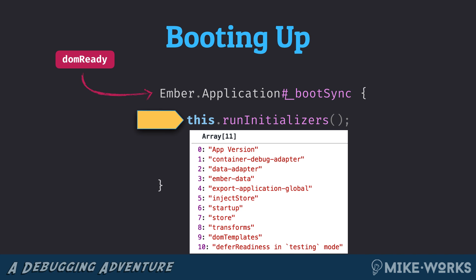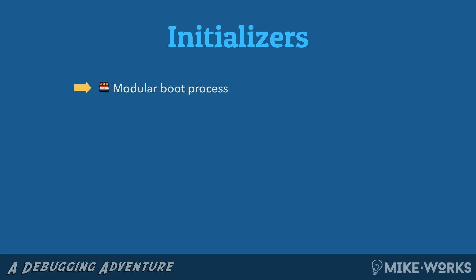The first thing that happens inside the boot sync method — and this is a summary of what happens, I've stripped a lot of code out while trying to preserve the intent and ideas present here — one of the first things we do is run through the list of initializers. These are modular pieces of how your Ember app boots up: functions that are basically arranged in a queue and run in order.